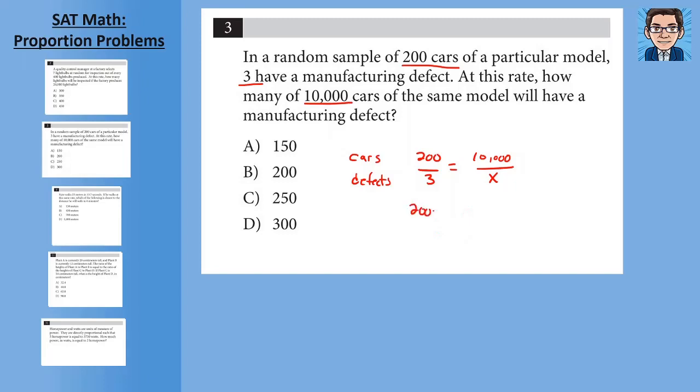Cross-multiply, 200 times x equals 3 times 10,000. And then we're going to divide by 200, x equals 150. That's going to be choice A.